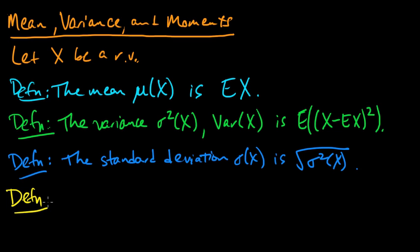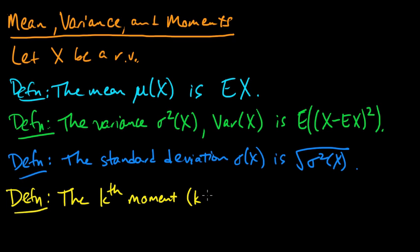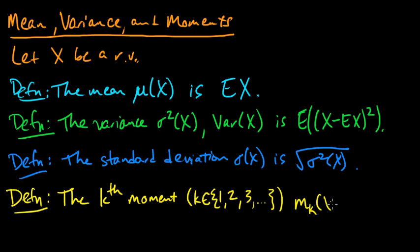Now the moments. The kth moment, where k is some positive integer — one, two, three, et cetera — is sometimes denoted m subscript k of x. Different people use different notation. It is the expected value of x to the k. To be clear, you take the kth power first and then take the expected value.